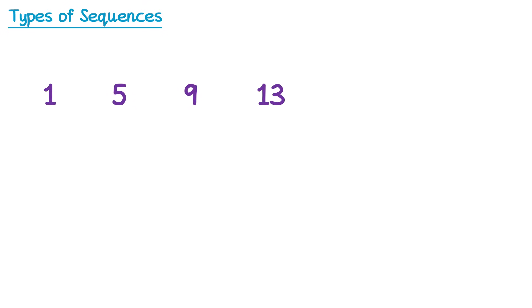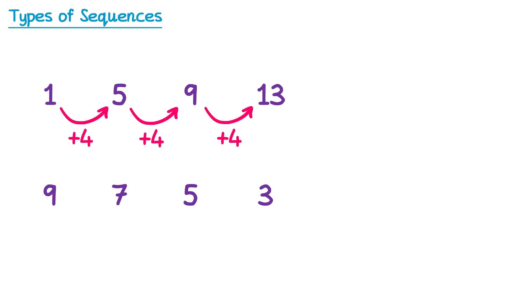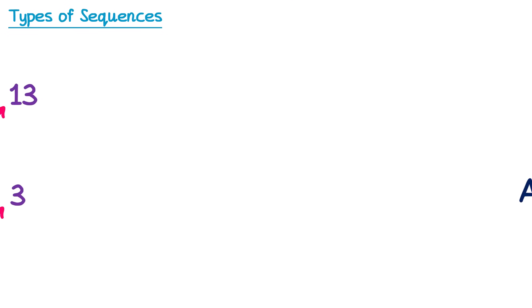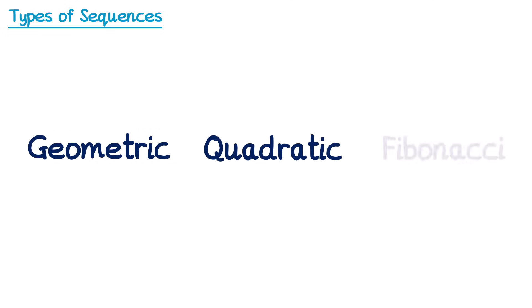In this sequence, to get from one term to the next, you always add 4. In this sequence, to get from one term to the next, you always subtract 2. If a sequence has a rule where you always add or subtract the same number to get the next term, we call that a linear sequence, or an arithmetic sequence. We covered these in a previous video, and in this video we're going to look at some different types of sequences: geometric, quadratic, and Fibonacci.